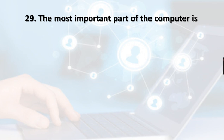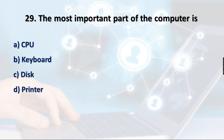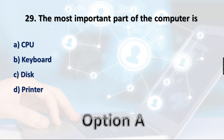Question 29: The most important part of the computer is — CPU, keyboard, disk, or printer. Keyboard, disk, and printer are not as important as the CPU. The Central Processing Unit is the most important and integral part of the computer, so option A is the right answer.